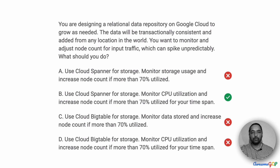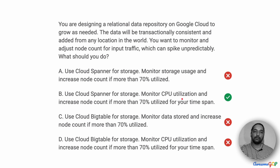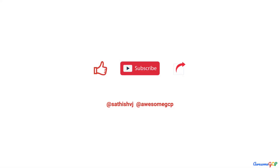Combining both decisions, the correct solution for this requirement is to use Cloud Spanner for storage and to monitor CPU utilization, increasing the node count based on the utilization. Now it's time to subscribe to all the great content lined up to help you learn Google Cloud and pass your certifications.